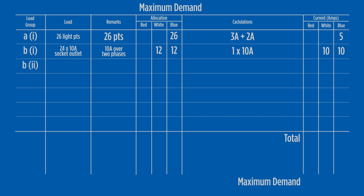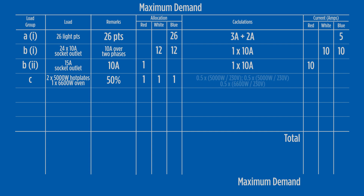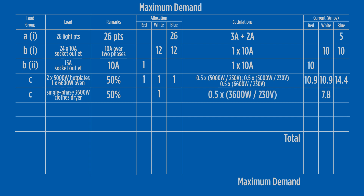In load group B2, we have one 15-amp single-phase outlet that contributes 10 amps to the red phase. The 16.6 kilowatt three-phase range contributes 5 kilowatts to two phases and 6.6 kilowatts to the third phase. Calculating current from load group C gives 10.9, 10.9 and 14.4 amps. The single-phase clothes dryer contributes 7.8 amps to the white phase from the calculation.